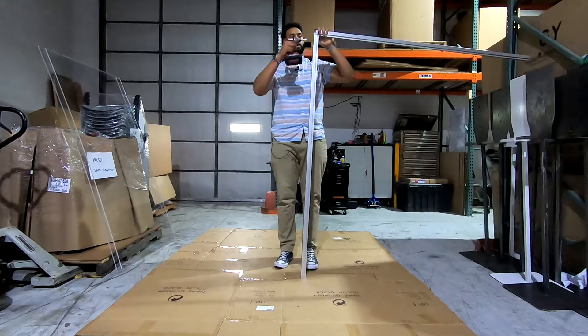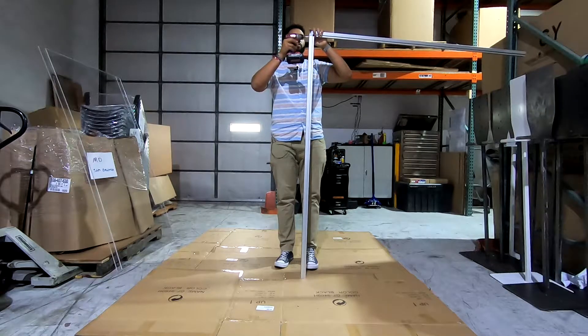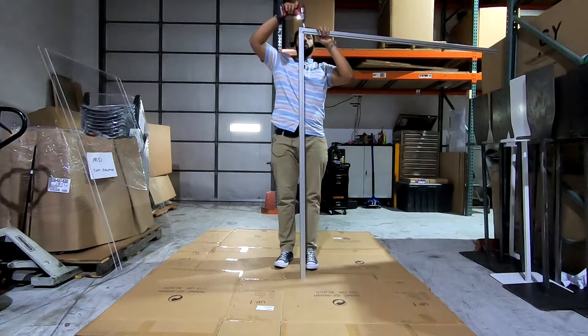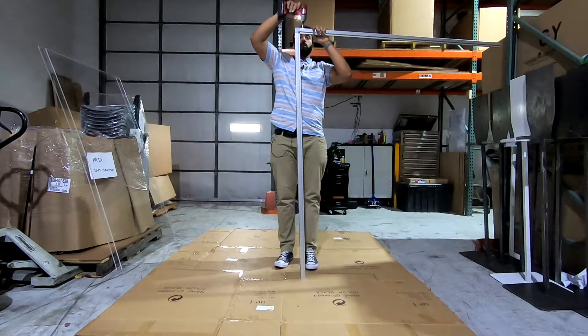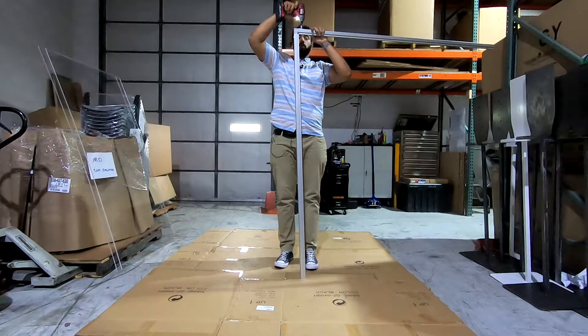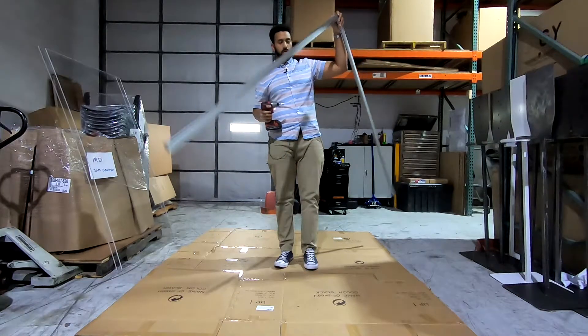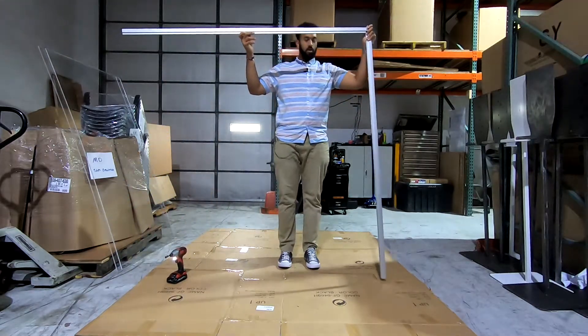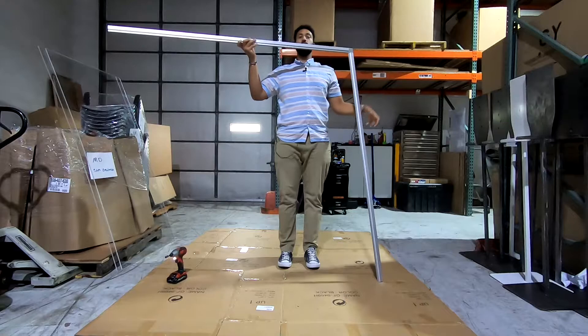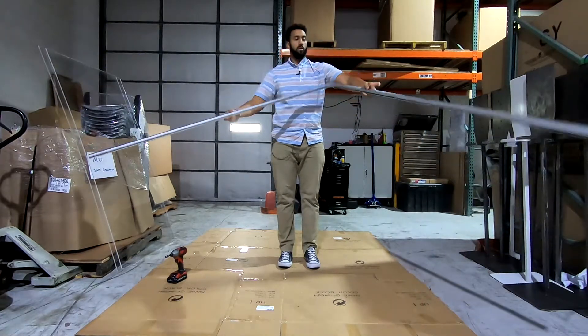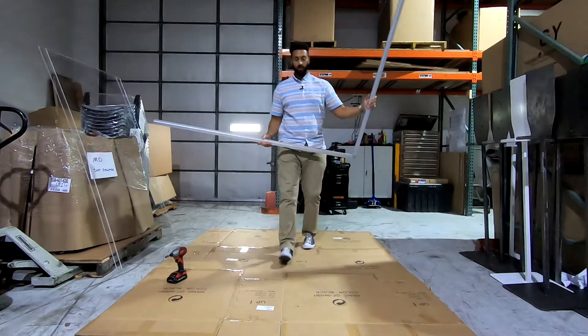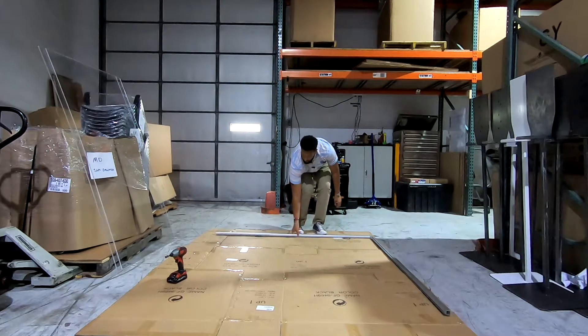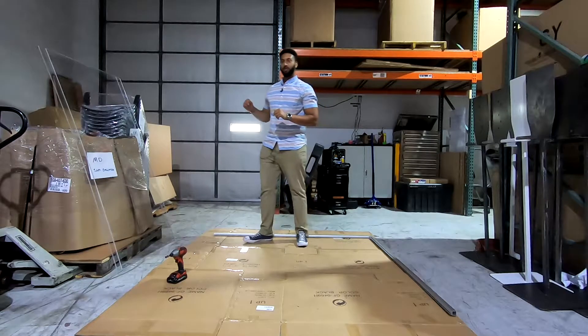Once you have those in hold, you want to make sure you screw those on tight. You are going to lay it down flat on the cardboard. Grab one of the polycarbonate sheets.